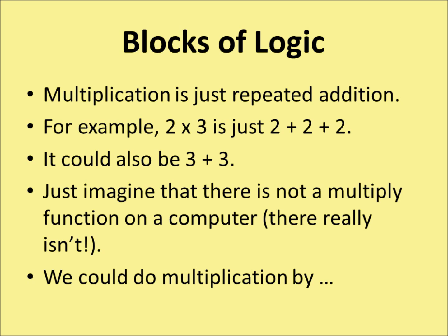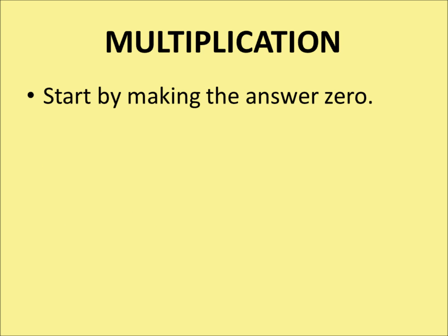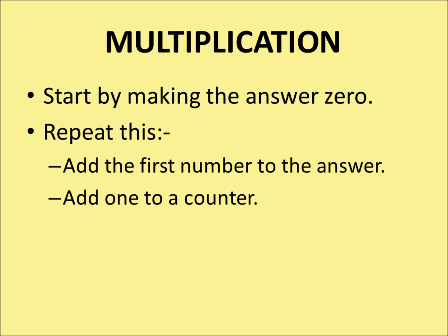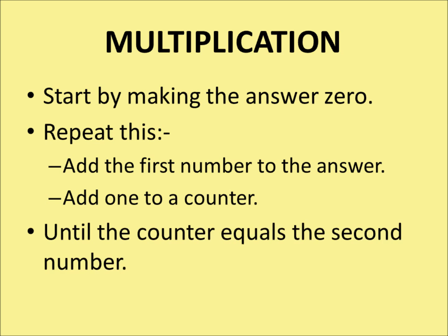We could do multiplication by doing the following. We could start by making the answer 0. Then we're going to repeat this bit of logic: we're going to add the first number to the answer, and add one to the counter. And we keep doing that until the counter is the same as the second number in our multiplication.